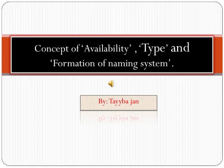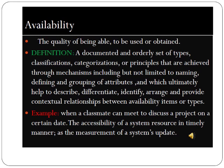What is availability? The quality of being able to be used or obtained. The definition of availability in taxonomy is a documented and orderly set of types, classifications, categorizations, or principles that are achieved through mechanisms including naming, defining, and grouping of attributes, which ultimately help to describe, differentiate, identify, arrange, and provide contextual relationships between availability items.